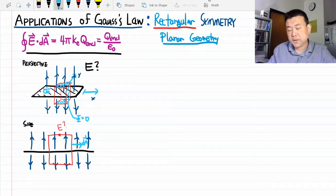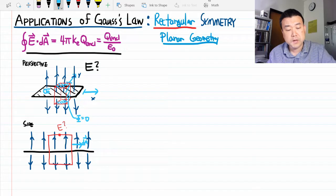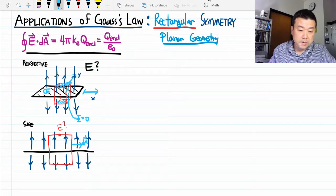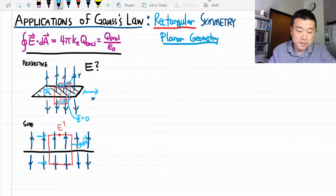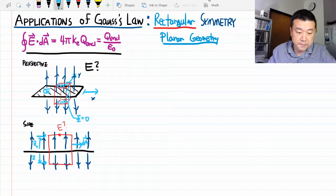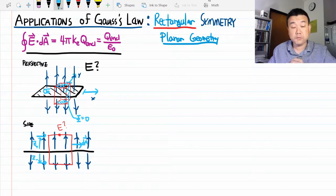And I want to be extra careful here. And I want to say that I arranged this Gaussian surface in such a way that this distance here, call it G plus, is the same distance here, G minus.